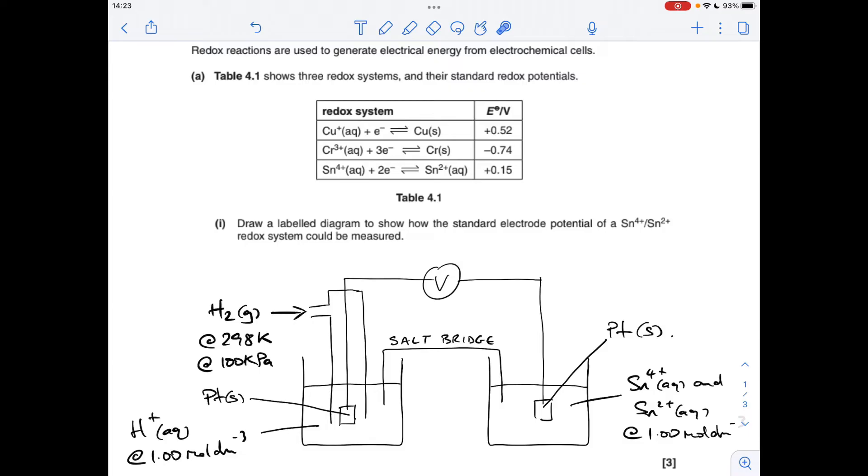Okay, so starting with the diagram, we've got to put the Sn4+ 2+ half cell against the standard hydrogen electrode, which I've drawn on the left hand side. Doesn't matter which way around you draw the half cells. So the key things we're looking for would be obviously your two beakers with your solutions in, connected by a salt bridge. Make sure that your salt bridge goes into the solution.